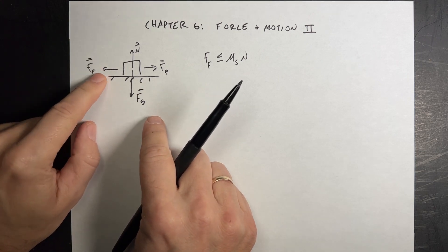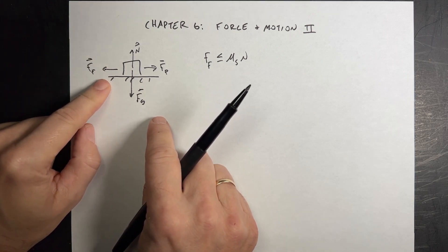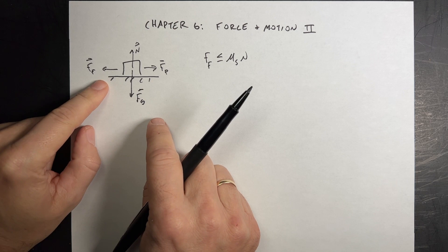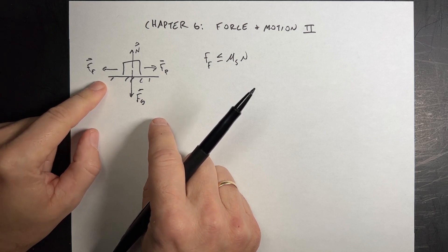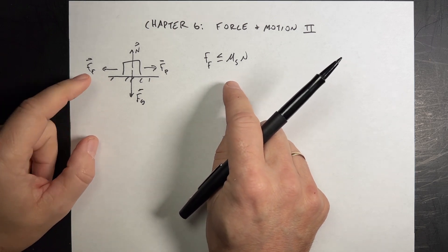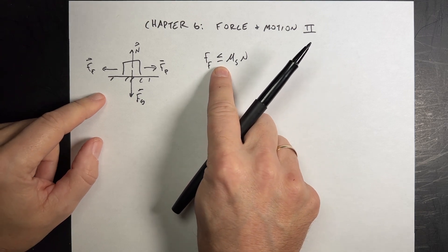If this can't be, if you always use the maximum frictional force here, if it's not the maximum, you usually can't solve for things other than just that's the value of the friction force because it's less than or equal to.